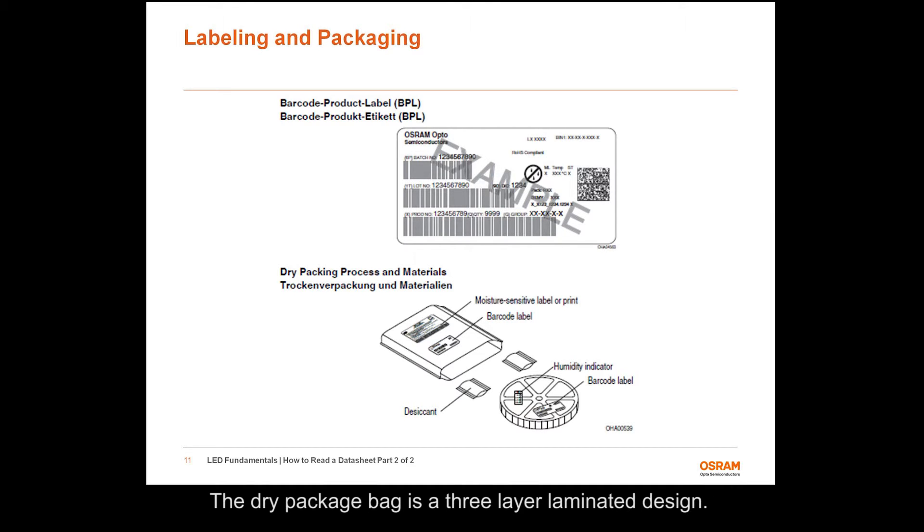The dry package bag is a 3 layer laminated design. ESD protection is provided by the middle layer of the aluminum metalized polyester. The desiccant material contains silica gel and active clay. The desiccant pouches greatly reduce the presence of moisture by maintaining the environment in the bag at no greater than 10% relative humidity, thus protecting the devices during shipment and storage for 24 months. A humidity indicator card is included in each package with humidity sensitive elements which turn from blue to pink whenever the specific relative humidity level is exceeded.